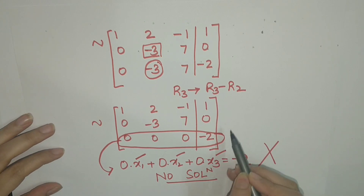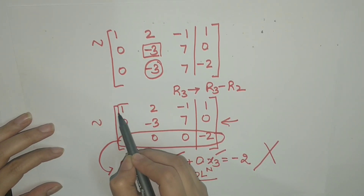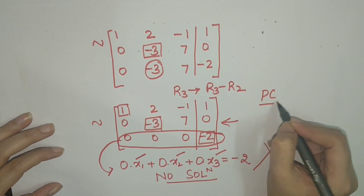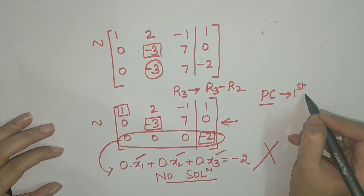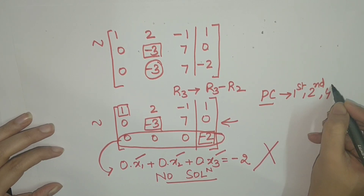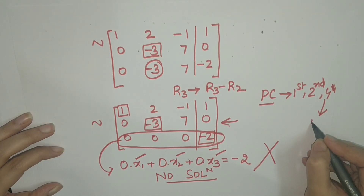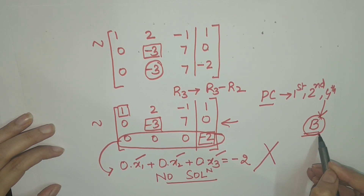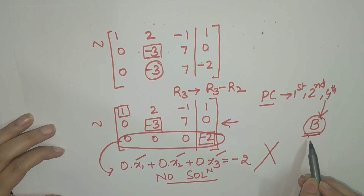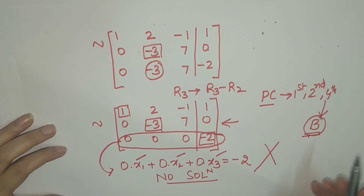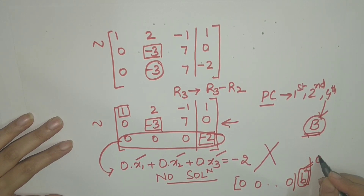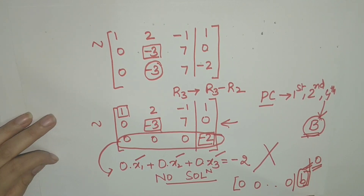Note that in this echelon form, the leading entries are 1, -3, and -2. So the pivot columns are the 1st, 2nd, and 4th. But the 4th column corresponds to the right-hand side vector b. Whenever b becomes a pivot column, the system is inconsistent. In general, whenever we have a row of the form [0 0 ... 0 | b] where b ≠ 0, the system is inconsistent.